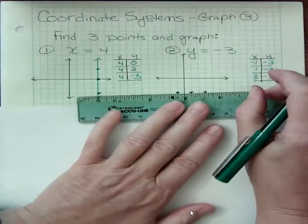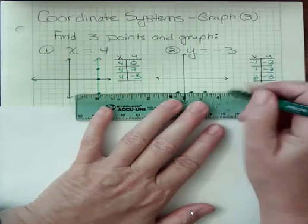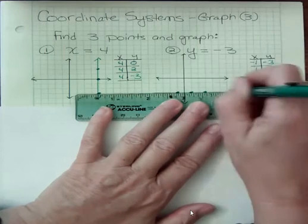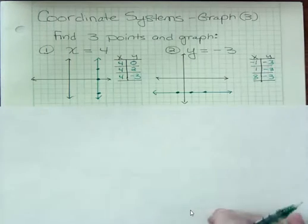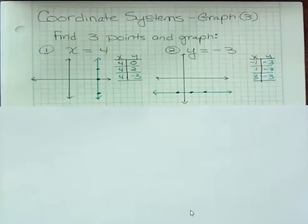You guessed it probably, it's a horizontal line because y never changes, it just gives us a constant function here, a constant equation that just stays right here at negative 3. So when you have x equals a number, you get a vertical line, and when you have y equal a number, you get a horizontal line.